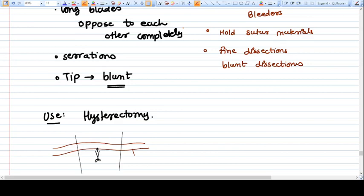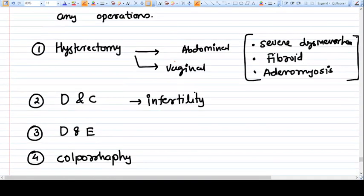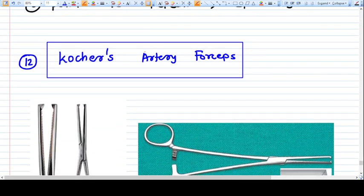These are two different designs of instrument that we use commonly. Now here is a third one, something called Cocher's artery forceps. Cocher's artery forceps has a combined design of both hemostatic forceps and Alice forceps.